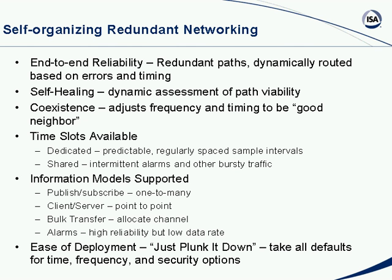Multiple information models are also supported. Classic publish-subscribe is one-to-many — one transmitter can relate to multiple receivers. There's also the client-server information model, most common in Ethernet and the World Wide Web. Then there's a bulk transfer model — you allocate a channel and dump a large amount of data, potentially taking three or four days. And there are alarms that have high reliability requirements but very low data rates. All those information models can be supported over this network.